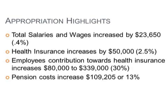This is going to be our last slide tonight — just highlights of the various categories. Total salaries and wages throughout the budget are increased by $23,000, that's 0.4 percent, less than half of a percent. Health insurance has increased by $50,000, which is a 2.5 percent increase.